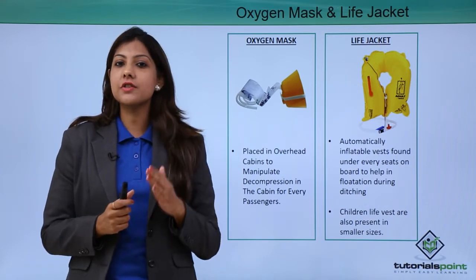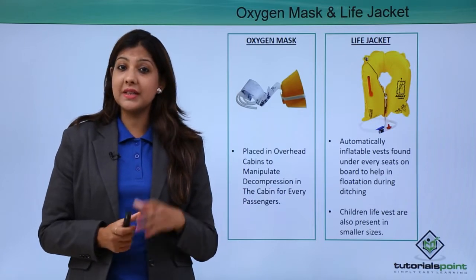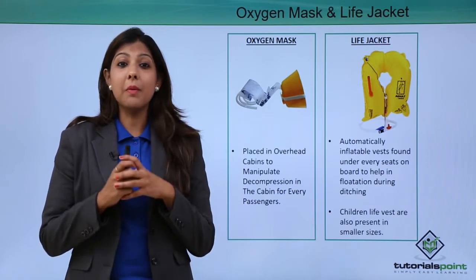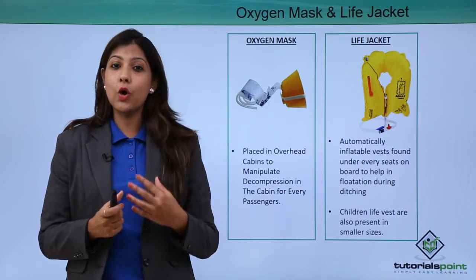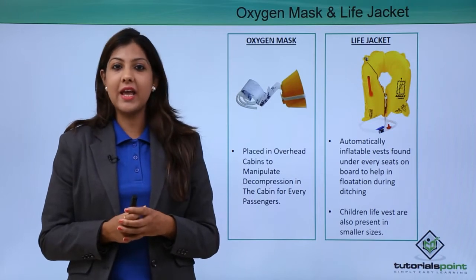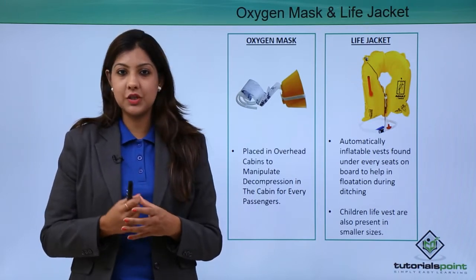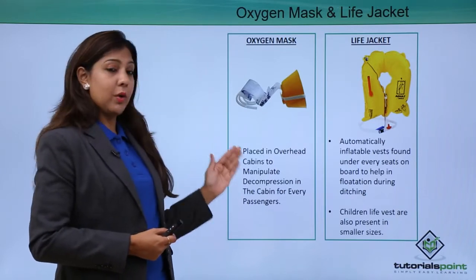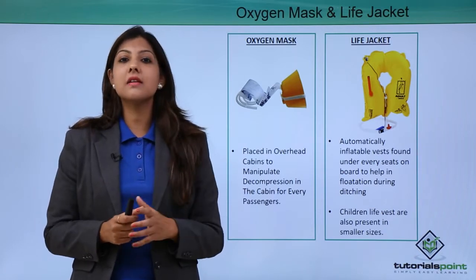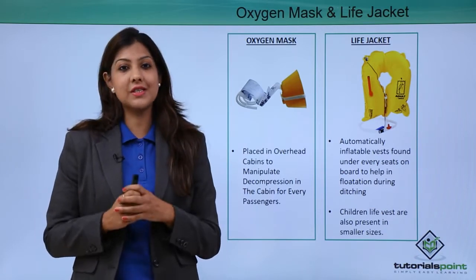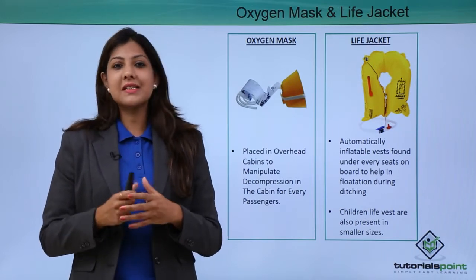Oxygen masks are placed above in the Passenger Service Unit or PSU, and in case of a decompression these oxygen masks deploy automatically. The passenger is supposed to pull the mask towards them and secure the harness around the head area, then start the oxygen flow by pulling it towards themselves. In each panel there is an extra mask in case one of them is not working correctly.